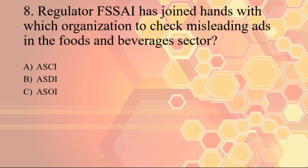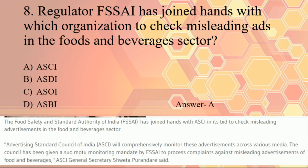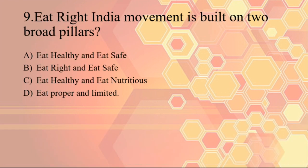Next question: regulator FSSAI has joined hands with which organization to check misleading ads in the foods and beverages sector? The correct answer is ASCI — the Advertising Standards Council of India, established in 1985. FSSAI has joined hands with ASCI to control misleading advertisements in the food and beverage sector.